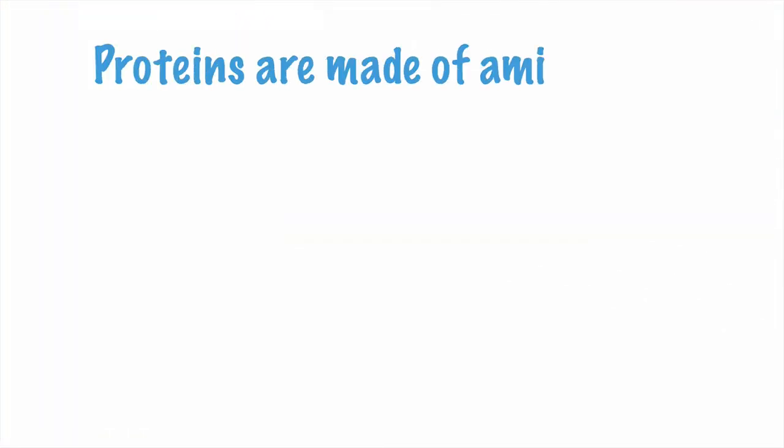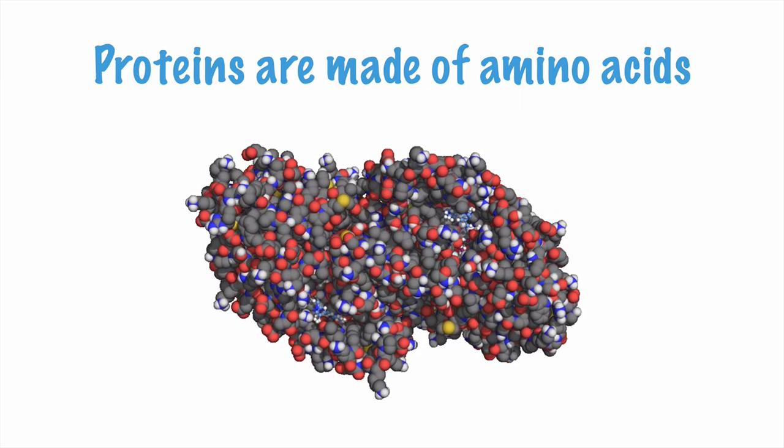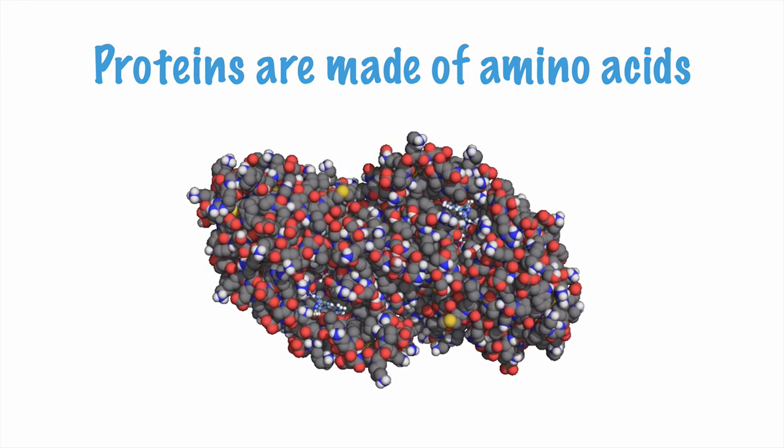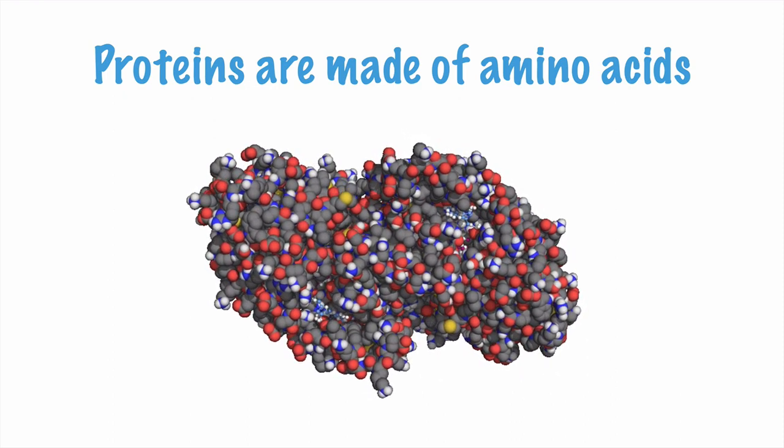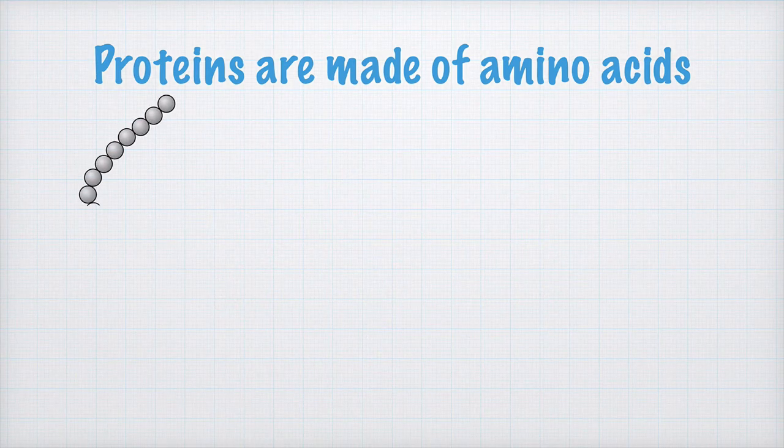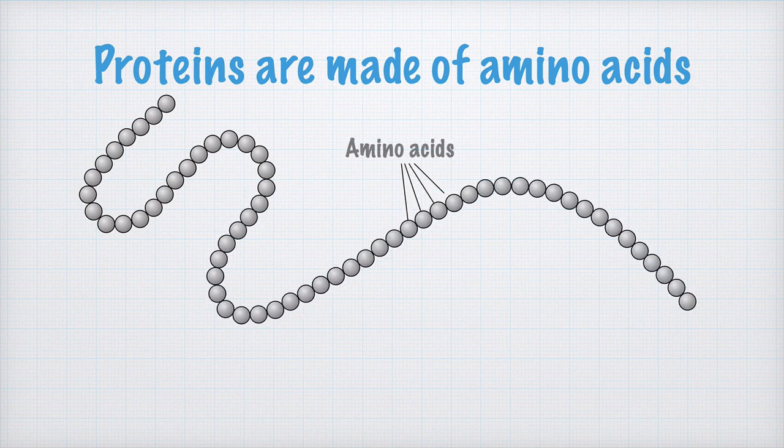Proteins are made of amino acids. Proteins are also very large molecules, macromolecules, as you can see in this image, where every sphere represents an atom in the protein. In the protein, the amino acids are linked together in a long, long chain, somewhat like beads on a string. And yes, I really do think you should copy this image to your notes too.